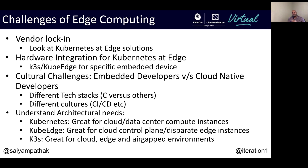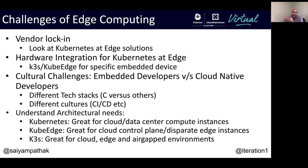Understanding your architectural needs is also important. From a 30,000-foot view: Kubernetes is really good for cloud and data center compute instances. Kube Edge is really good when you want a cloud control plane with disparate edge devices — like Nest devices connecting to a cloud control plane. K3S is also good for cloud use cases and edge as well, including air-gap environments — like in a wind farm where turbines don't have direct internet access but are connected to a local network.